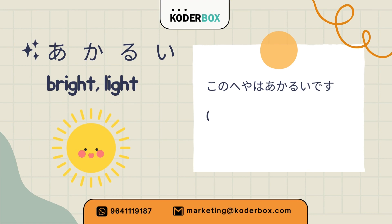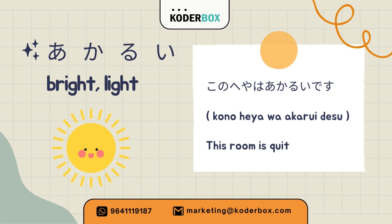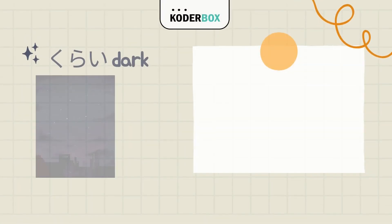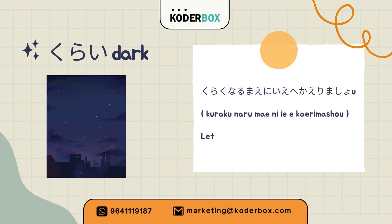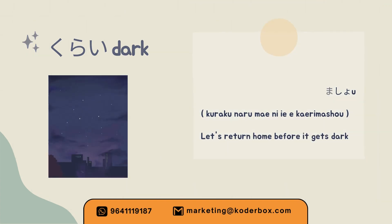Seventh: Bright / Light — Akarui. Kono heya-wa akarui desu. This room is quite bright. Eighth: Dark — Kurai. Kurakunarumae-ni ie-e kaerimashoo. Let's return home before it gets dark.